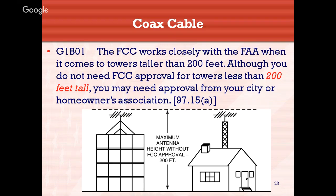The most common antenna connector for HF radios operating up to 150 MHz or the two-meter band is the PL-259. The FCC works closely with the FAA when it comes to towers taller than 200 feet. Although you don't usually need FCC approval for towers less than 200 feet, you may still need approval from your city or homeowners association. If you live close to an airport and plan to put up a 200-400 foot tower, you'll need FAA and FCC approval, and may have to comply with lighting requirements to make the tower visible to aircraft at night.